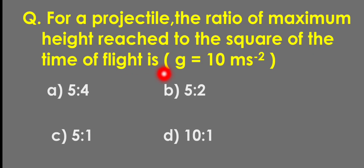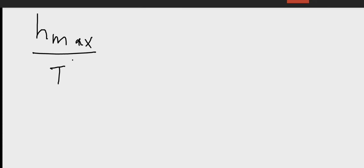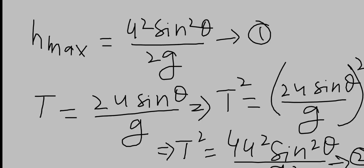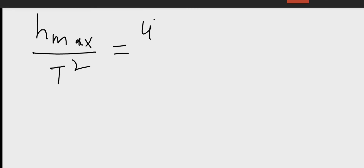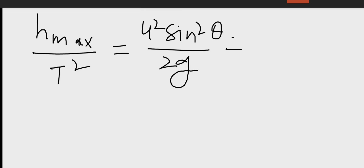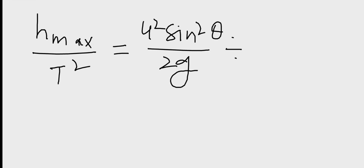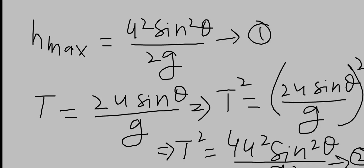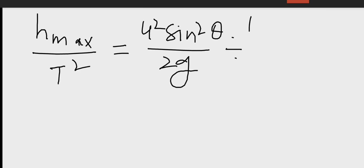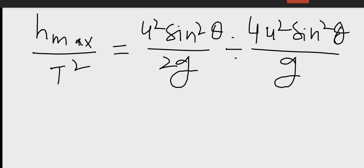We have to calculate the ratio of maximum height to the square of the time of flight. The maximum height is u squared sine squared theta divided by 2g, divided by the square of the time of flight which is 4u squared sine squared theta divided by G squared.